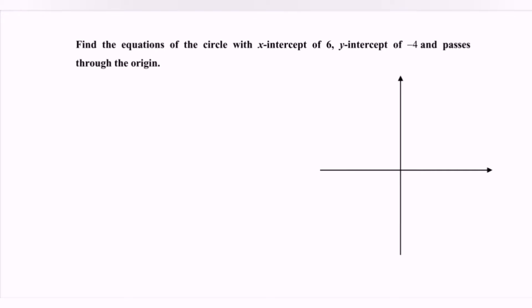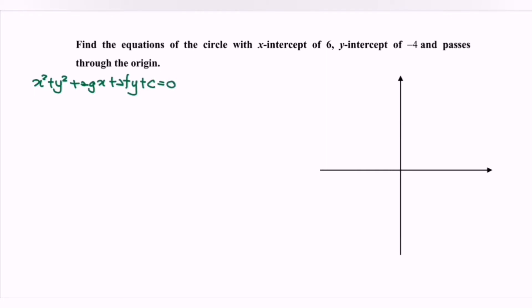Hello everyone, welcome to my channel. In this video, I'm going to discuss the example for circle for the situation of 3 points. So find the equation of the circle. Kindly note the formula for the equation of the circle. Here we have x squared plus y squared plus 2gx plus 2fy plus c equals to 0. This is the general form of the equation of the circle.